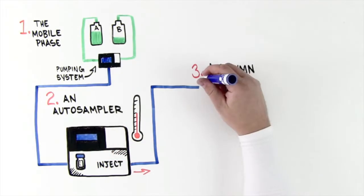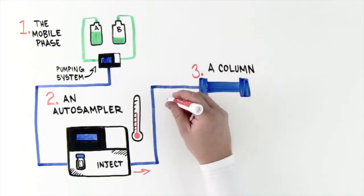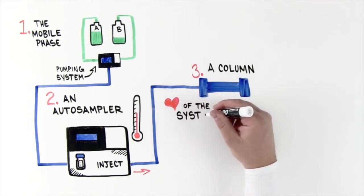A column. The column is packed with a stationary phase that separates the sample. A non-polar silica-based phase is the most common phase for reversed-phase HPLC.